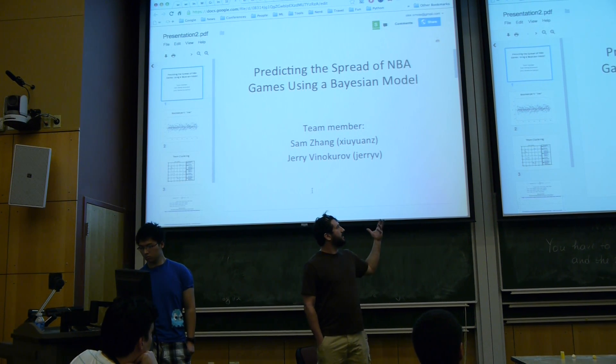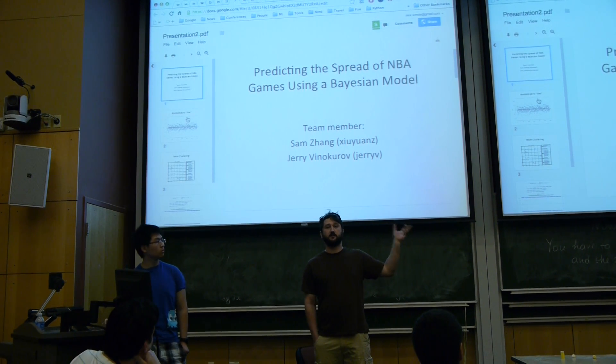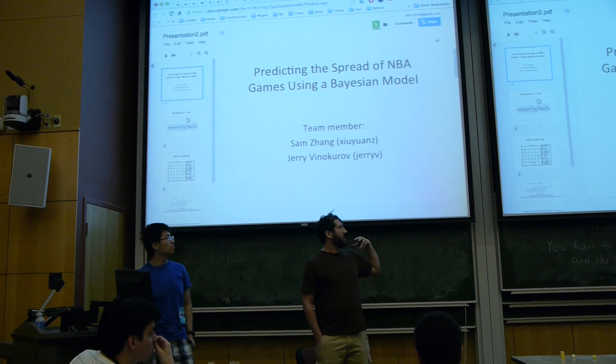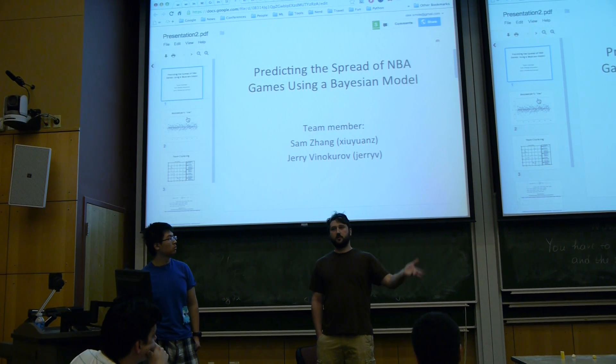Or rather, how can we use the historical data from teams in order to beat the bookmaker, essentially?